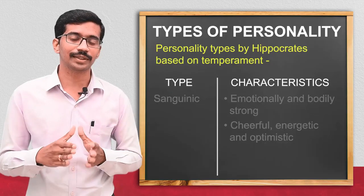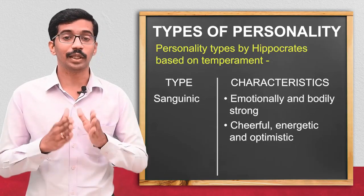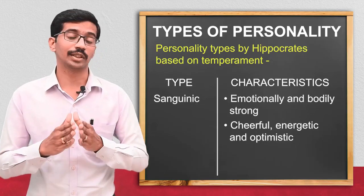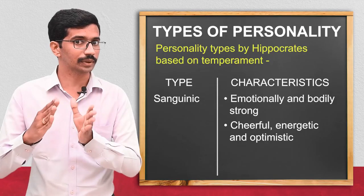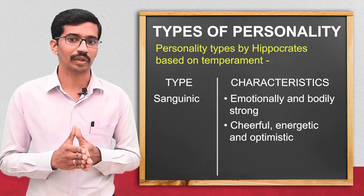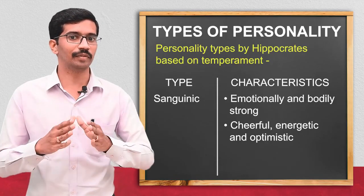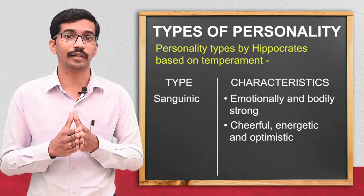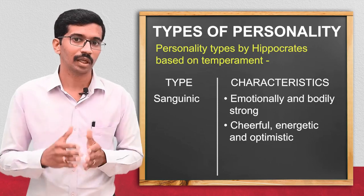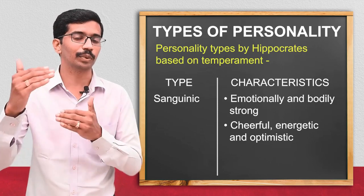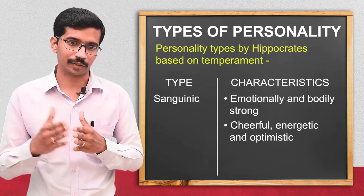Coming to the fourth one, the sanguinic type: the person is both emotionally and bodily strong. He will be very much energetic and cheerful, and he will always have optimism — seeing only the positive side of any activity.